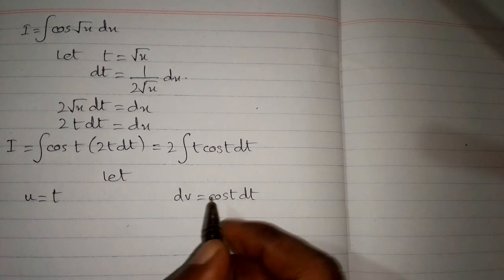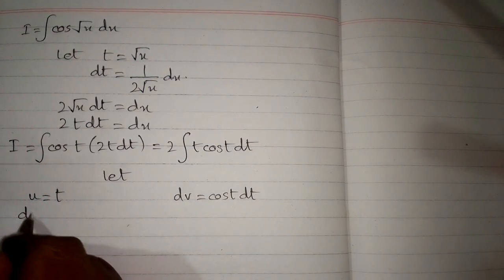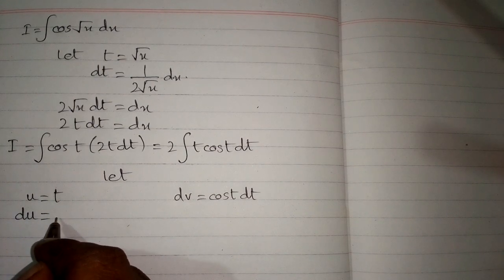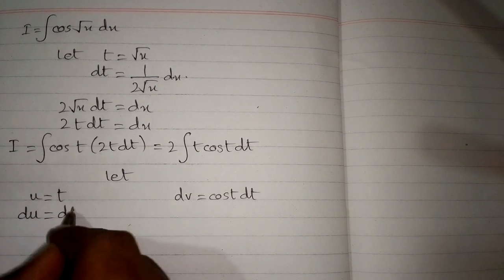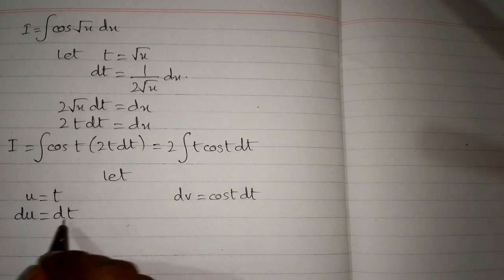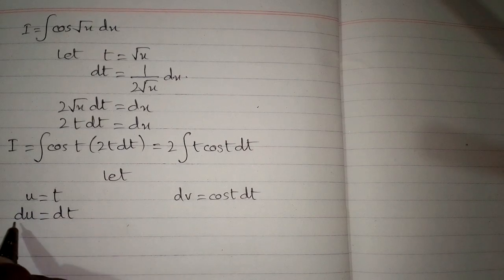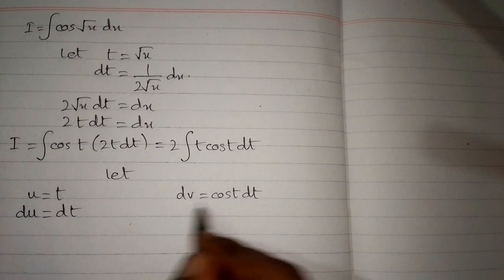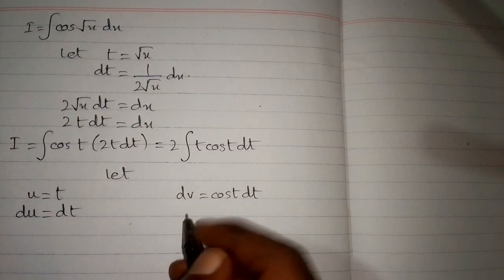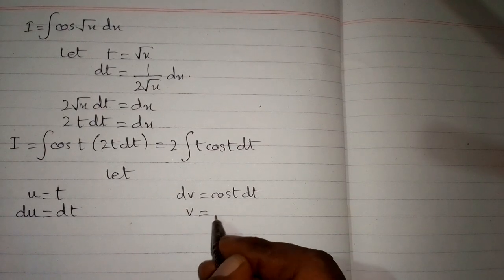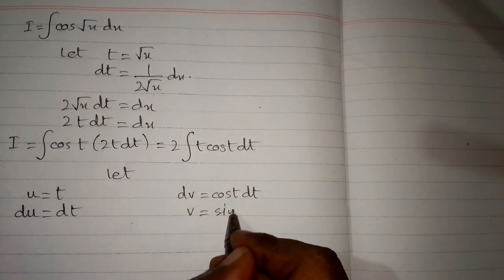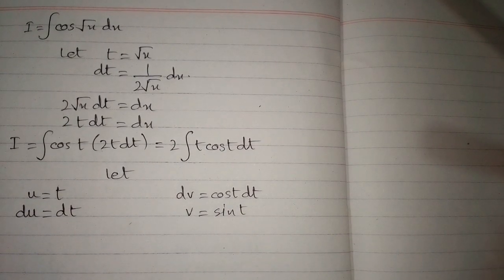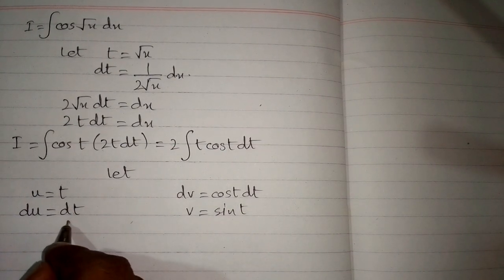The differential du is equal to the derivative of t, which is 1, multiplied by dt, so du equals dt. Integrating both sides of dv, we have v equal to sine of t, because the integral of cosine of t is sine of t.